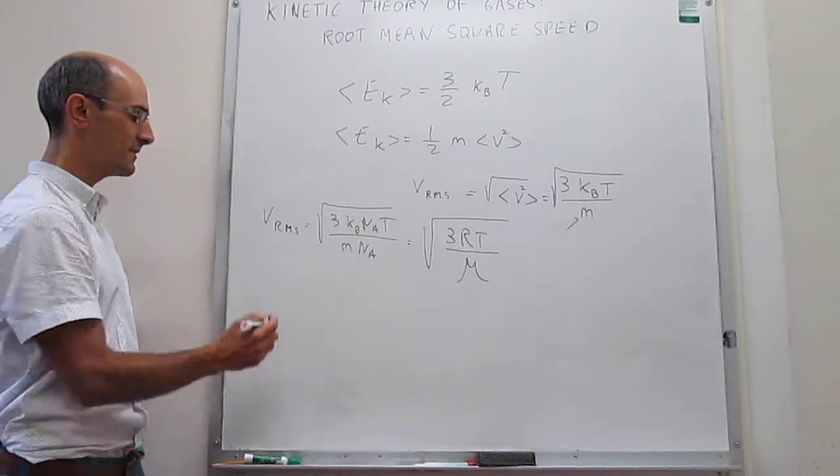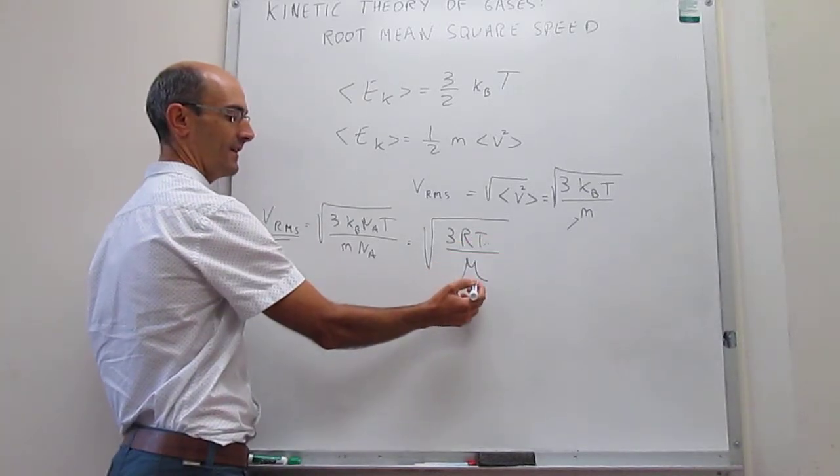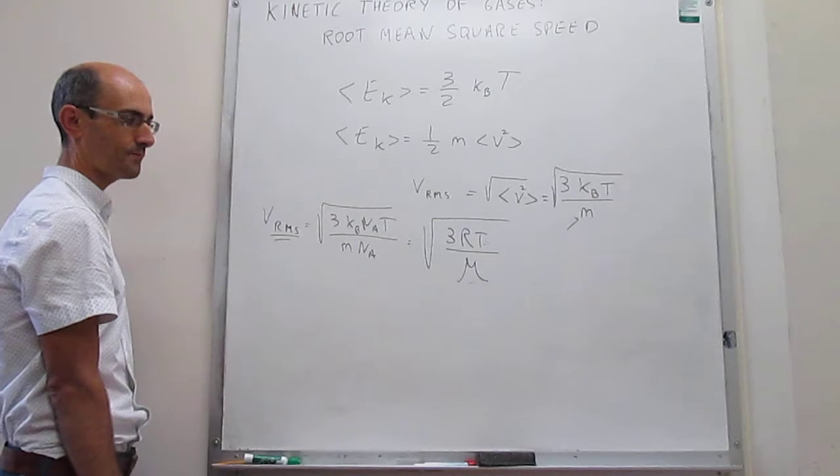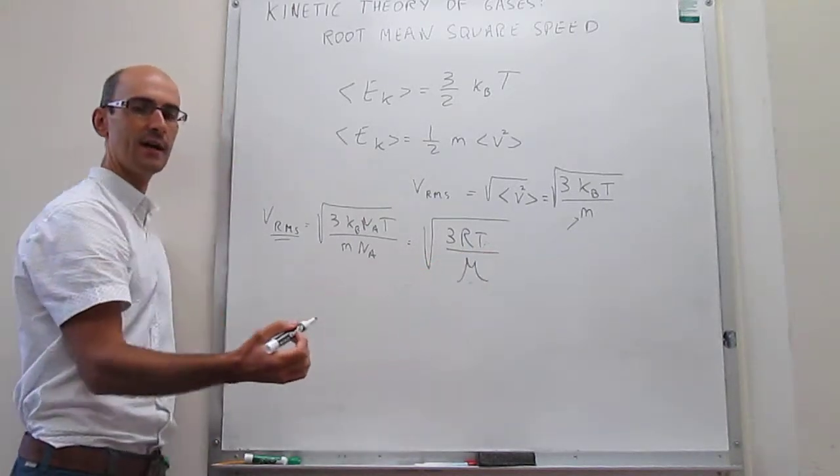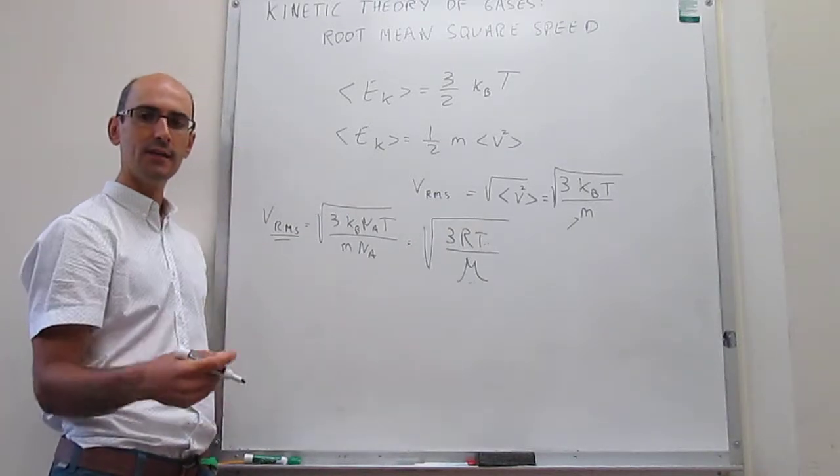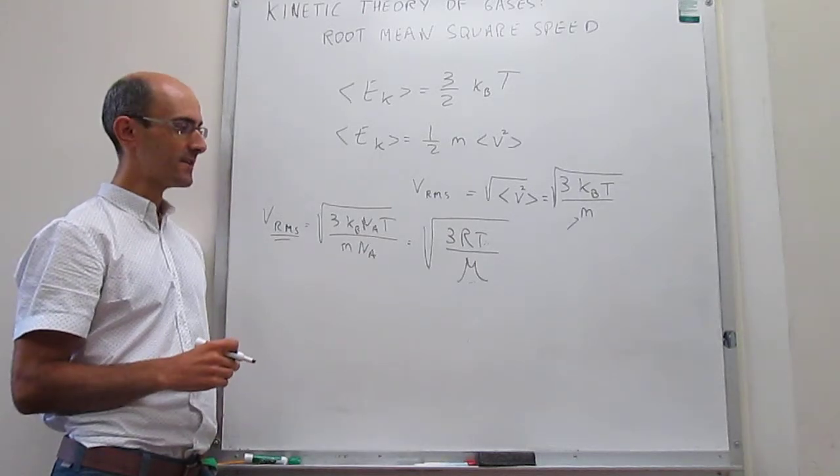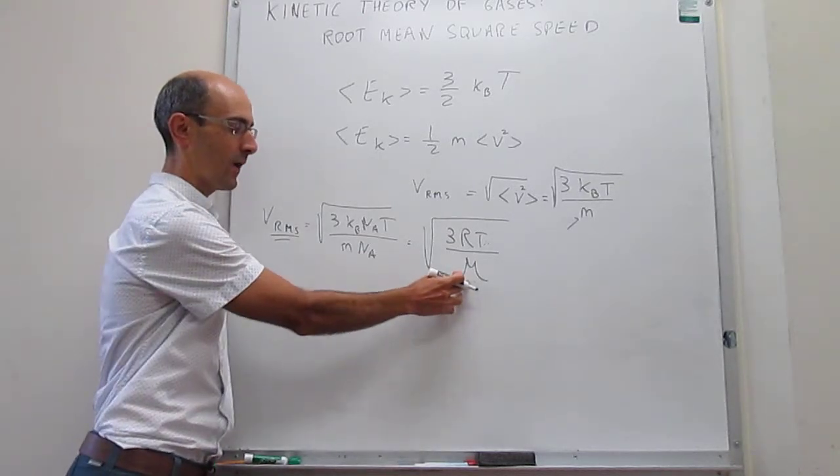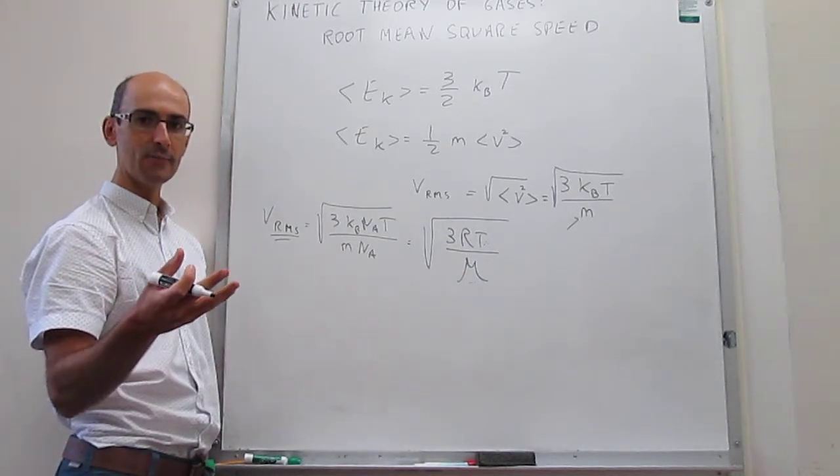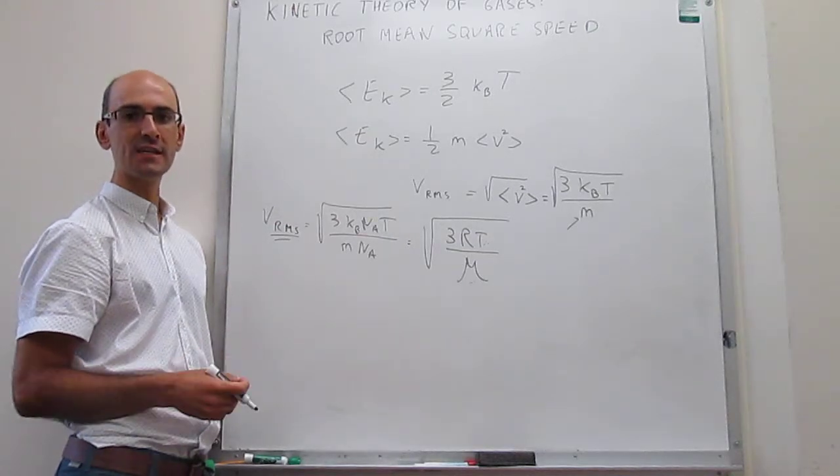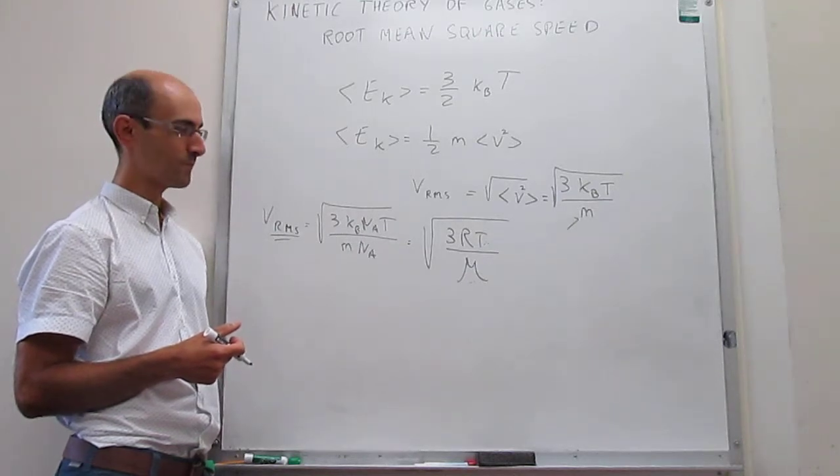Something interesting about this expression is that the velocity depends on the temperature and inversely on the mass of the particle. This makes perfect sense. We expect that if there's a lot of thermal motion, if the temperature is high, there should be more thermal motion, and that means the particle should move on average faster. Here we have a dependence on the mass such that if the mass is very high, then the average velocity is going to be lower, which also makes perfect sense. Heavier particles tend to move more sluggishly.